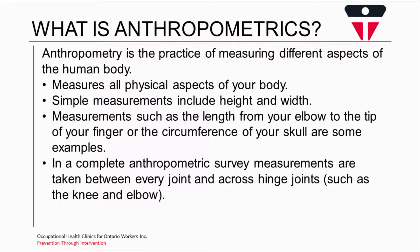So, to begin with, what is anthropometrics? Well, it's the practice of measuring different aspects of the human body. It measures all physical aspects. Simple measurements are included, such as height and weight. It can also look at specific examples, such as the length from your elbow to the tip of your finger or the circumference of your skull. And a complete anthropometric survey measurements are taken between every joint and across hinge joints, such as the knee and the elbow.